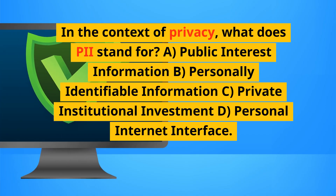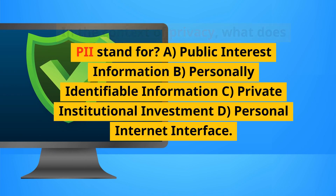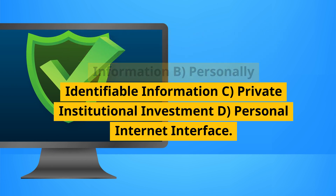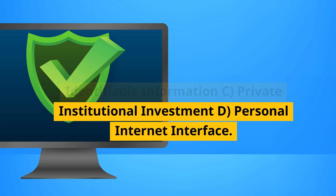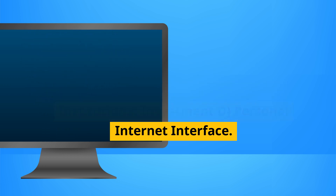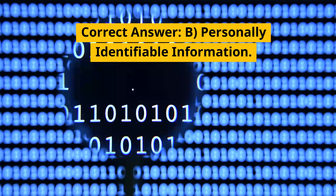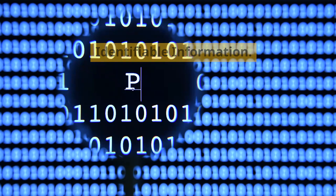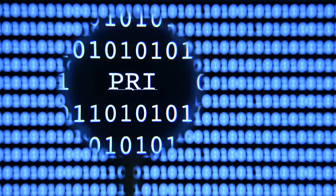In the context of privacy, what does PII stand for? A. Public interest information. B. Personally identifiable information. C. Private institutional investment. D. Personal internet interface. Correct answer: B. Personally identifiable information.